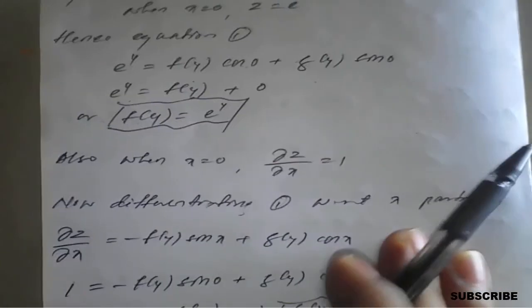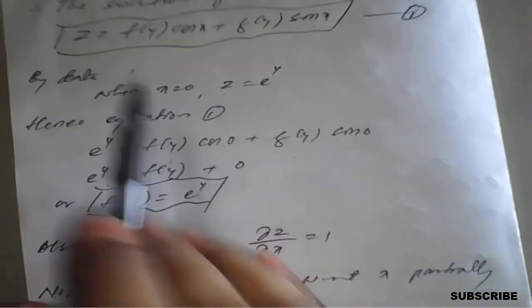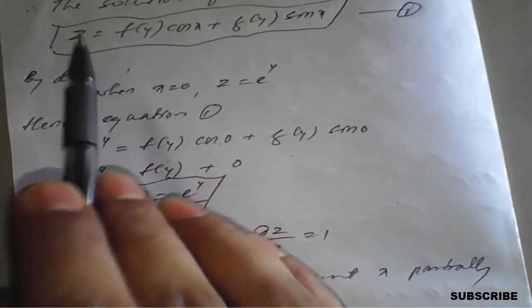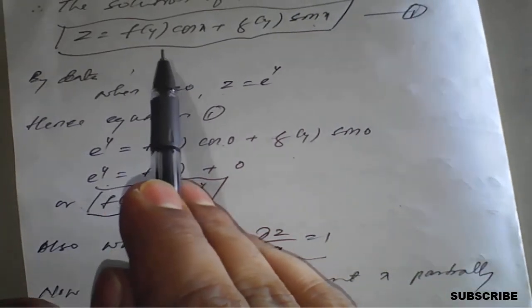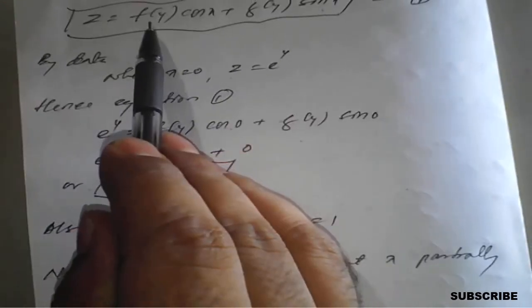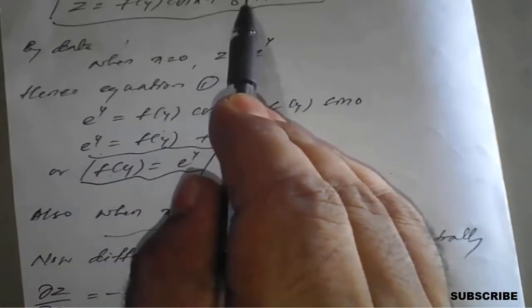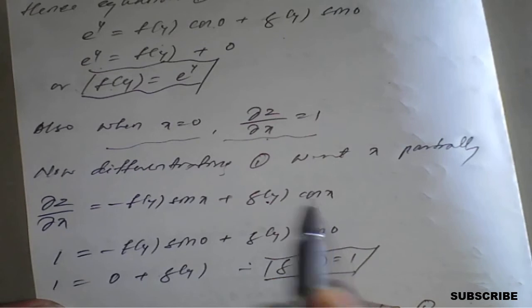For the second condition, x = 0 and ∂z/∂x = 1. Since equation one doesn't directly contain ∂z/∂x, we differentiate equation one partially with respect to x: ∂z/∂x = −f(y)sin(x) + g(y)cos(x), where f(y) and g(y) are treated as constants.